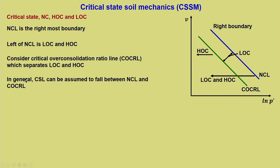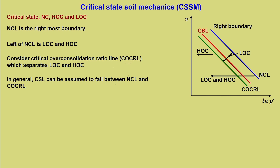In general, the critical state line (CSL) falls somewhere between NCL and COCRL. The portion between CSL and COCRL is lightly over-consolidated on both sides of CSL. Whether a lightly over-consolidated soil will exhibit a peak depends on the specific soil type, but definitely to the left of COCRL the soil will exhibit heavily over-consolidated behavior. The value of critical over-consolidation ratio depends on soil type.